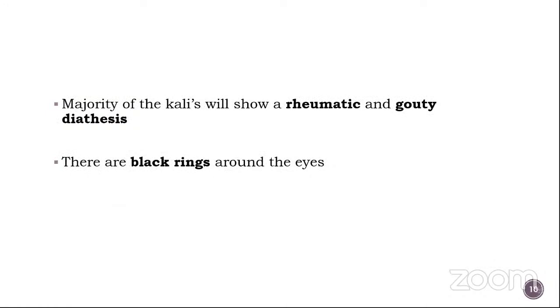Majority of the Kalis will show a rheumatic and a gouty diathesis. And there is a peculiar black rings around the eyes. So this is regarding the constitution — remember: water logging, tendency to get fat, slow acting, rheumatic and gouty diathesis. You can also classify it as a hydrogenoid constitution, with the water logging and all.